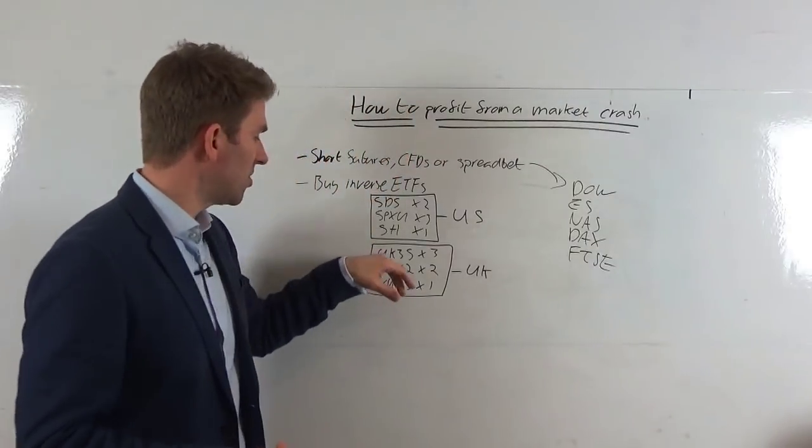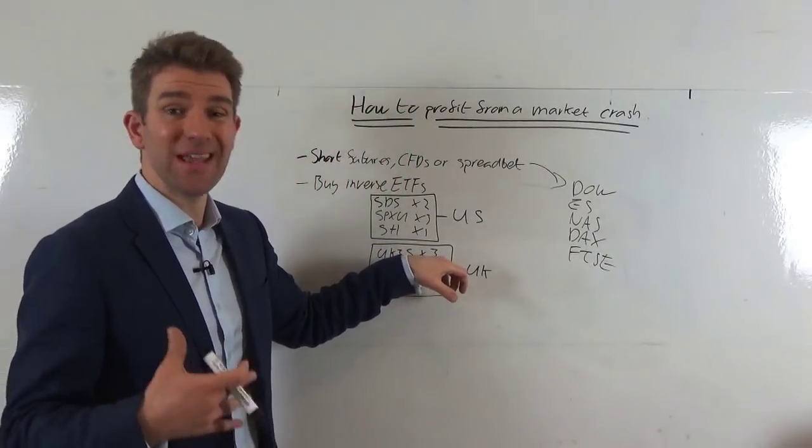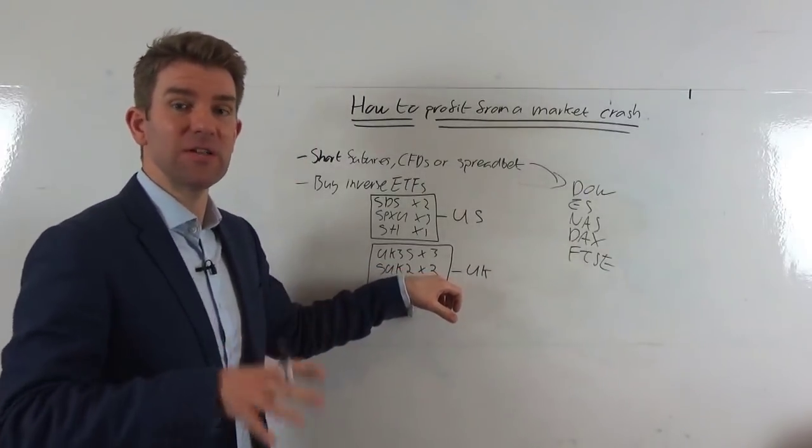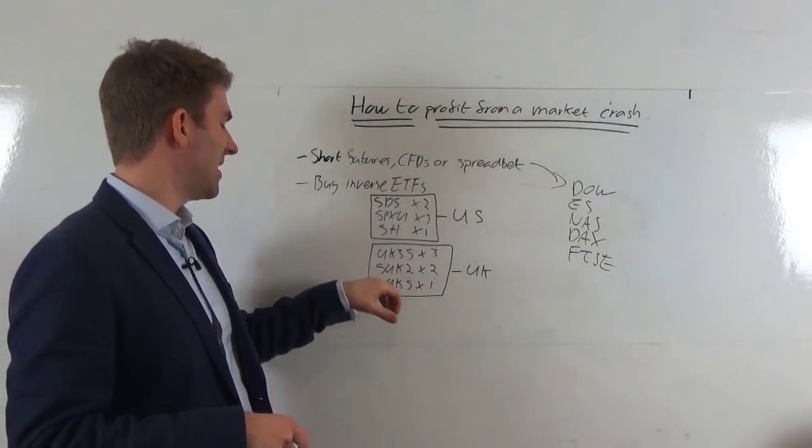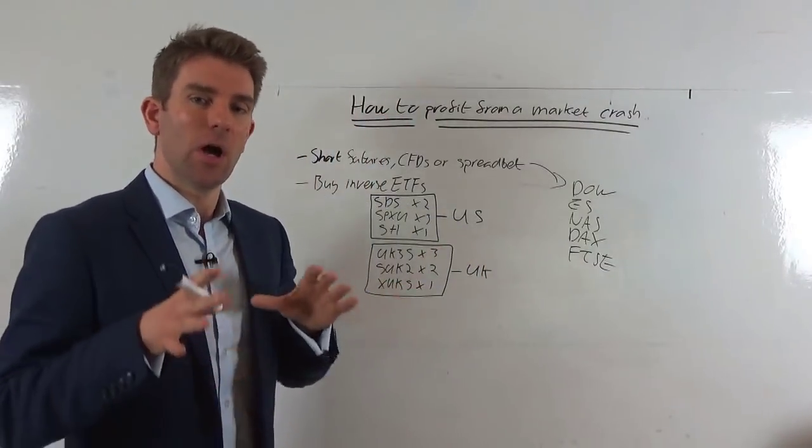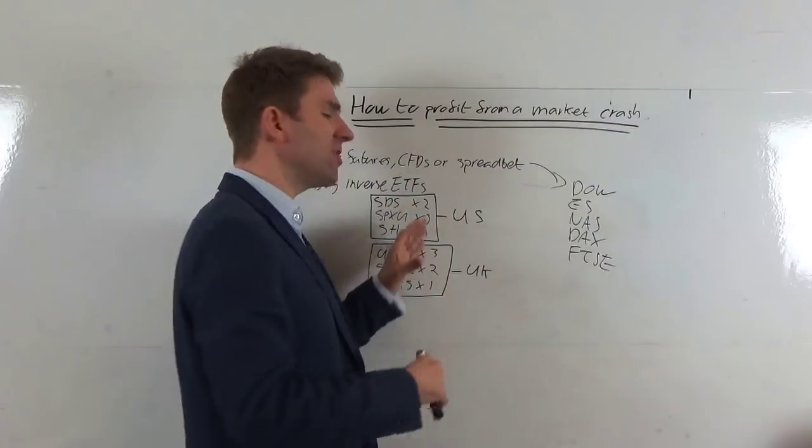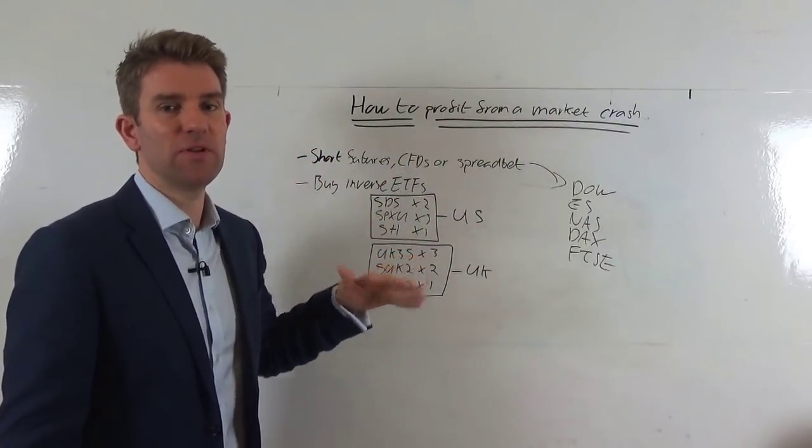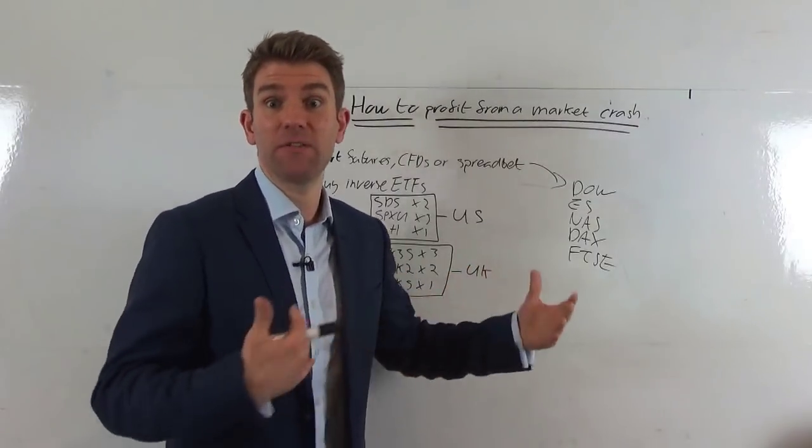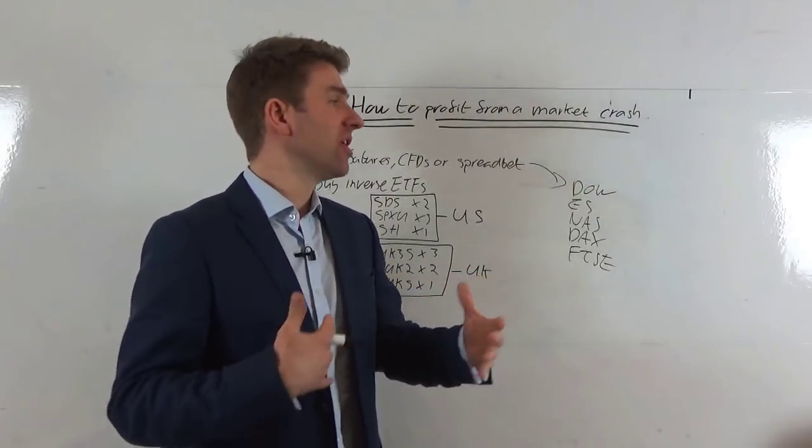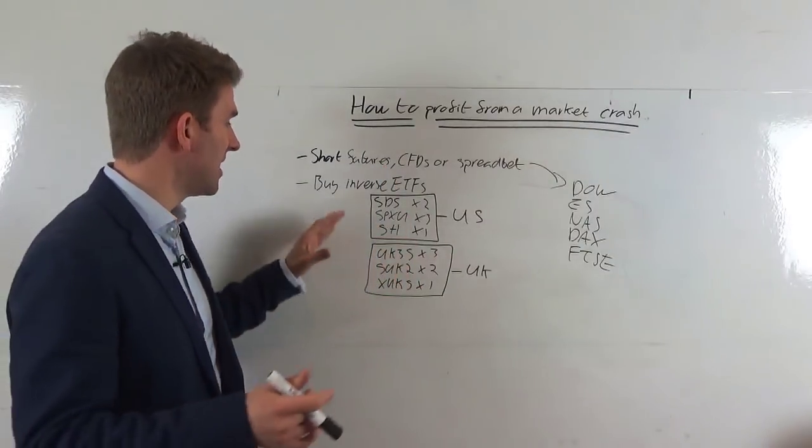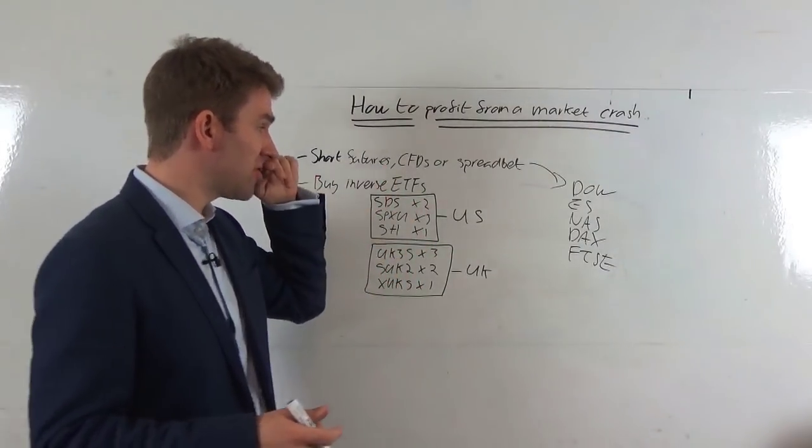If we rotate it over to the UK, we've got UK 3S, the triple leverage inverse ETF. SUK 2 is the double leverage inverse ETF tracking the FTSE 100, and XUKS is just the inverse. So you know, understand how you've got to be cautious using these triple leverage, holding them over time. But if you're looking for that intraday boost from a market crash, let's see if you can identify that it's going to crash in the next couple of days or you think it is, you want to really maximize your opportunity, then these triple leverage or double leverage are the way to go.